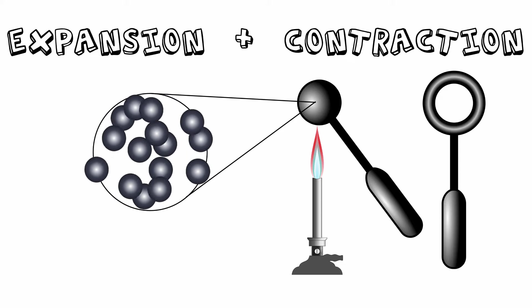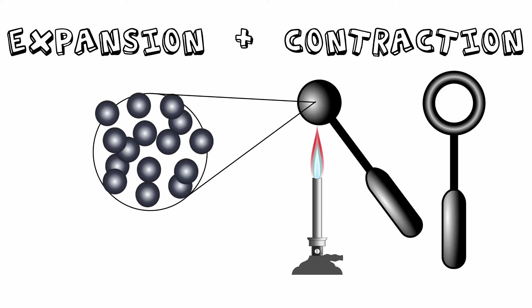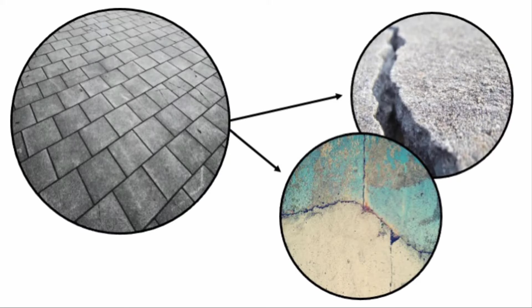This is an important concept in real life as it impacts many design elements. For example, have you ever wondered why the sidewalk is created in separate blocks and not just one smooth line? It is to allow for expansion and contraction to occur. As the sun hits the concrete, it will expand.